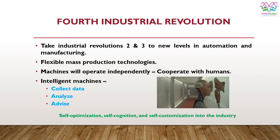The fourth industrial revolution, ongoing today, is taking industrial revolutions two and three to new levels in automation and manufacturing, leading to flexible mass production technologies. Machines will operate independently and cooperate with humans — there will be mechanized communication where machines talk to each other. These intelligent machines will collect data, analyze data, and advise on what is good, acting like a human brain. This means there will be self-optimization, self-cognition, and self-customization in industry. That is the fourth industrial revolution.